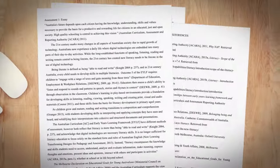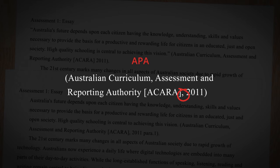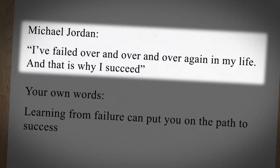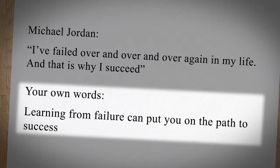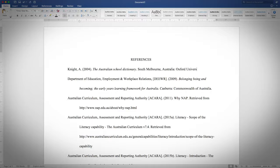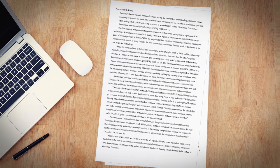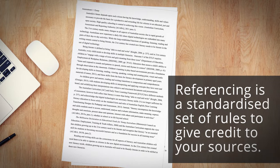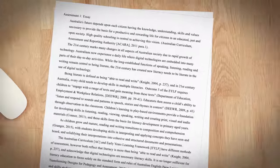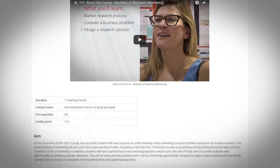In this video we'll show you how to properly reference using the APA referencing method. This will include the difference between a direct quote and paraphrasing, how to complete an in-text citation for a quote or paraphrase, and how to write your end-of-text reference list. Referencing is a standardized set of rules that you'll use to give credit to your sources. At Swinburne Online, Education and Psychology units use the APA referencing method — check the unit details in your online classroom.